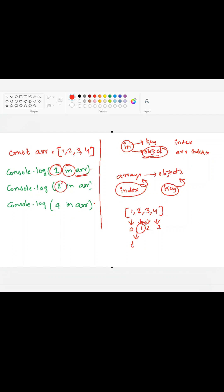2 is present in this. Yes, it is there. It will return true. 4 is present here. No, 4 is not there. So it will return false. That's it.